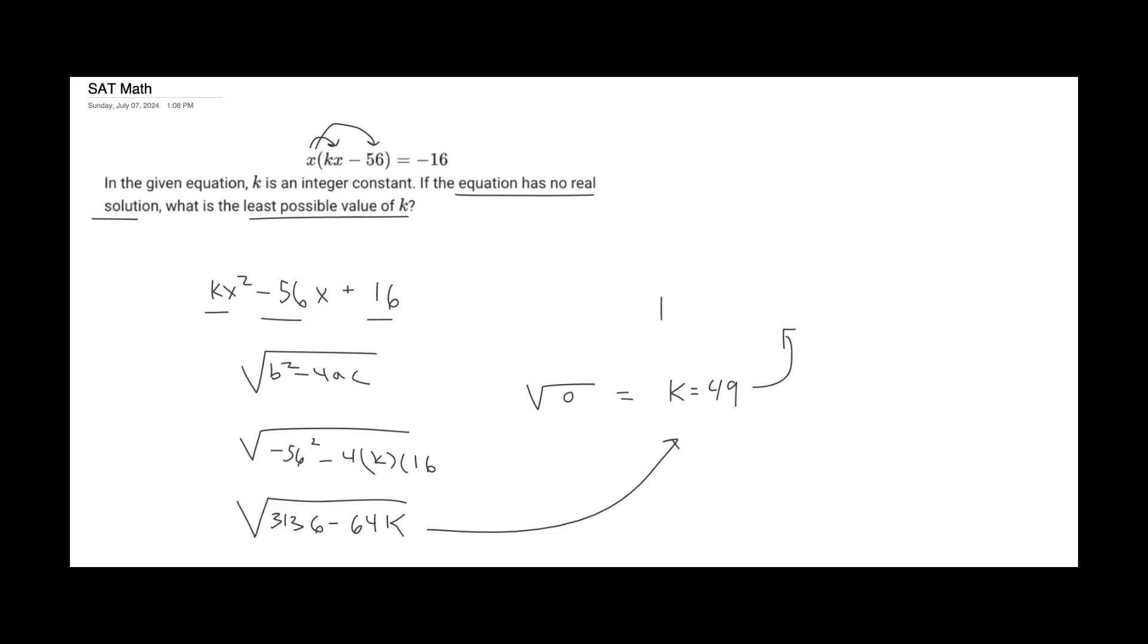And we will get k equals 50. You can check this: 64 times 50 subtract that away from 3,136 and you'll indeed get a negative number. Therefore, our answer for the least possible value of k for the no solutions of this equation would be 50.